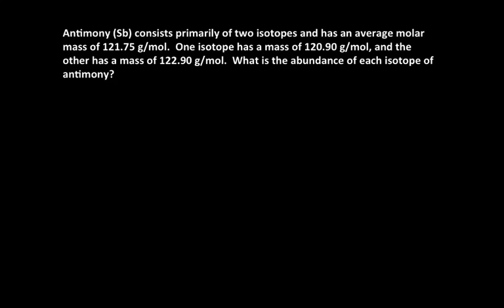In this problem we have antimony, which has an average molar mass of 121.75 grams per mole. It consists of two isotopes, one with a mass of 120.9 grams per mole, and the other with a mass of 122.9 grams per mole. What we'd like to know is how much of each of those two isotopes we have in a sample of antimony.